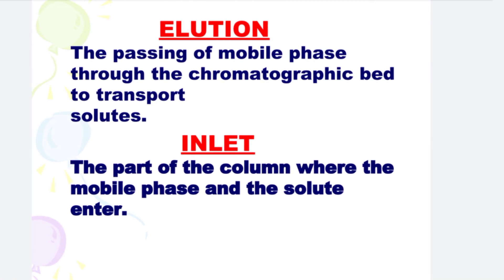Next is Elution. Elution is the passing of mobile phase through the chromatographic bed to transport solutes. Next is Inlet. The Inlet is the part of the column where the mobile phase and the solute enter.